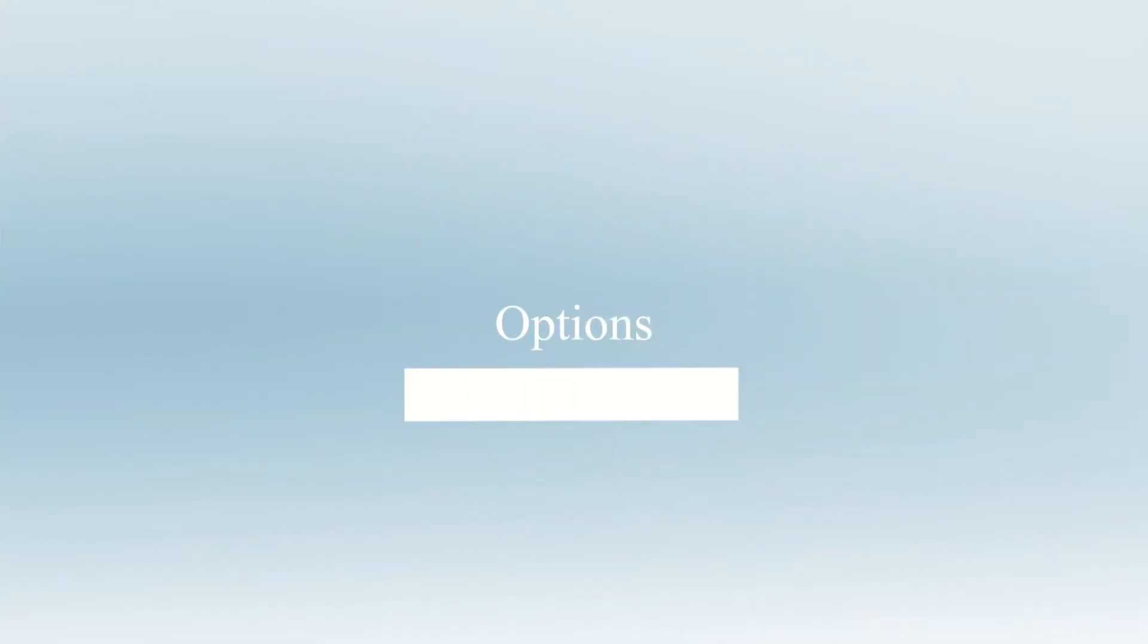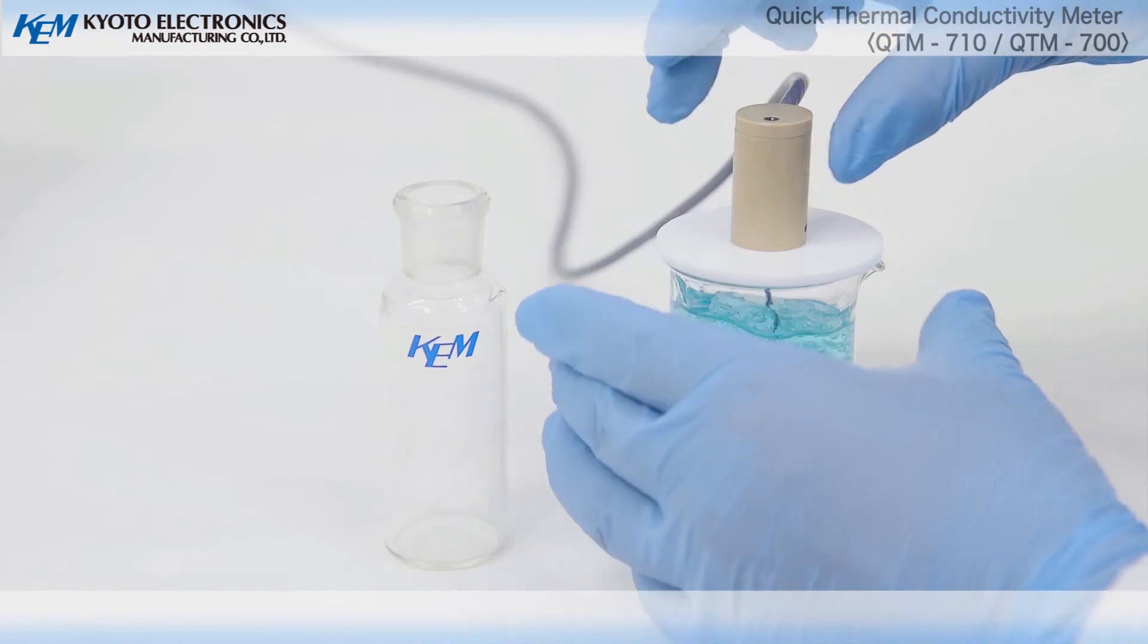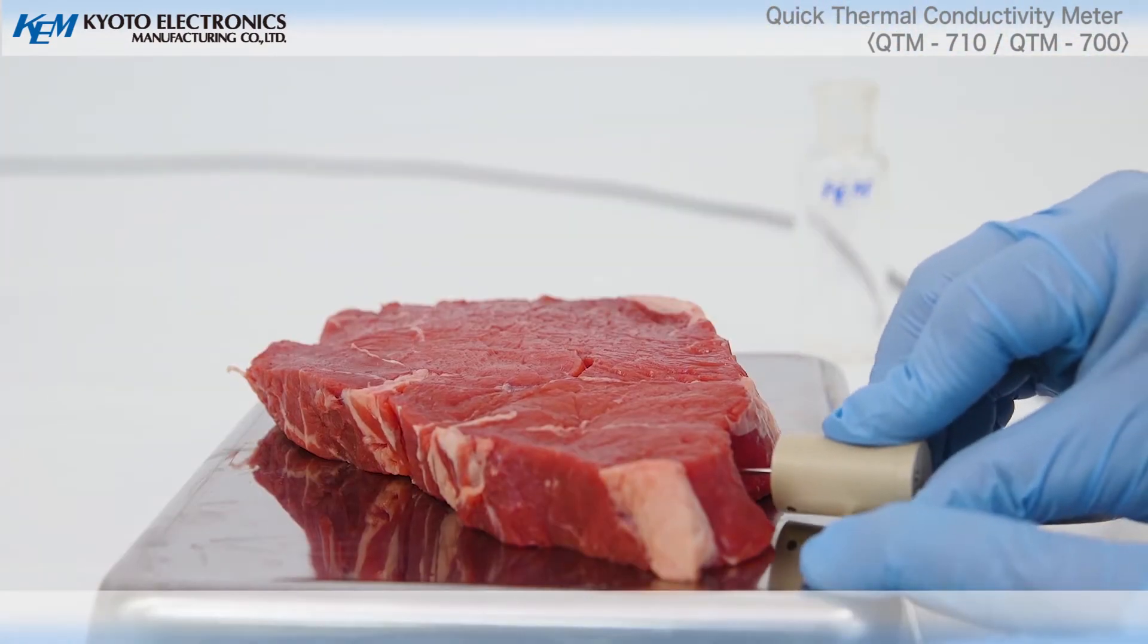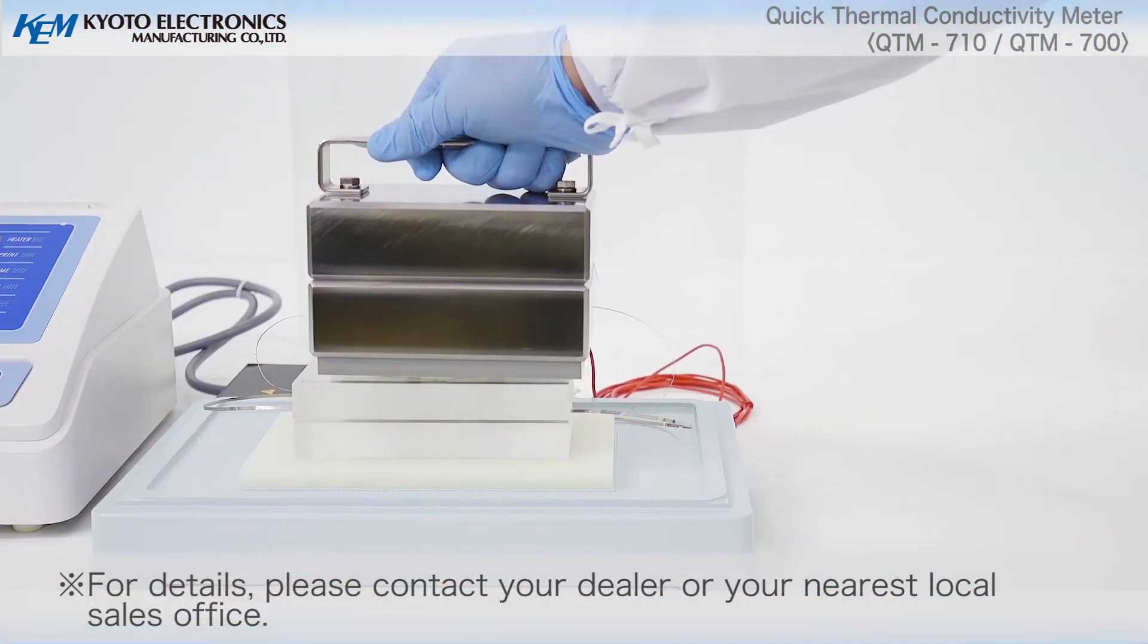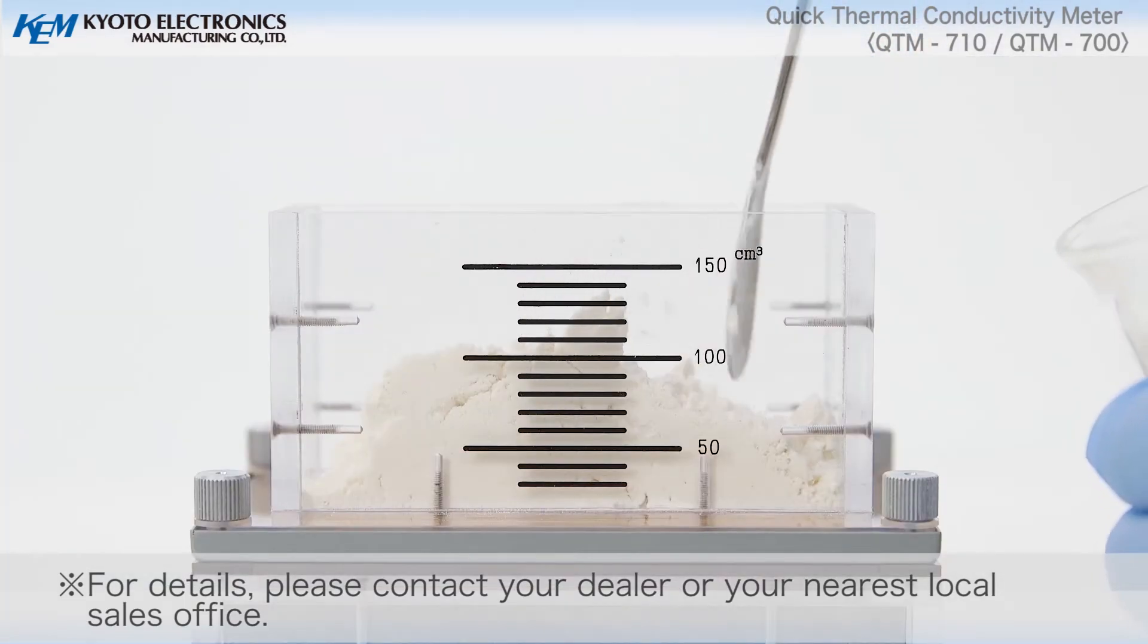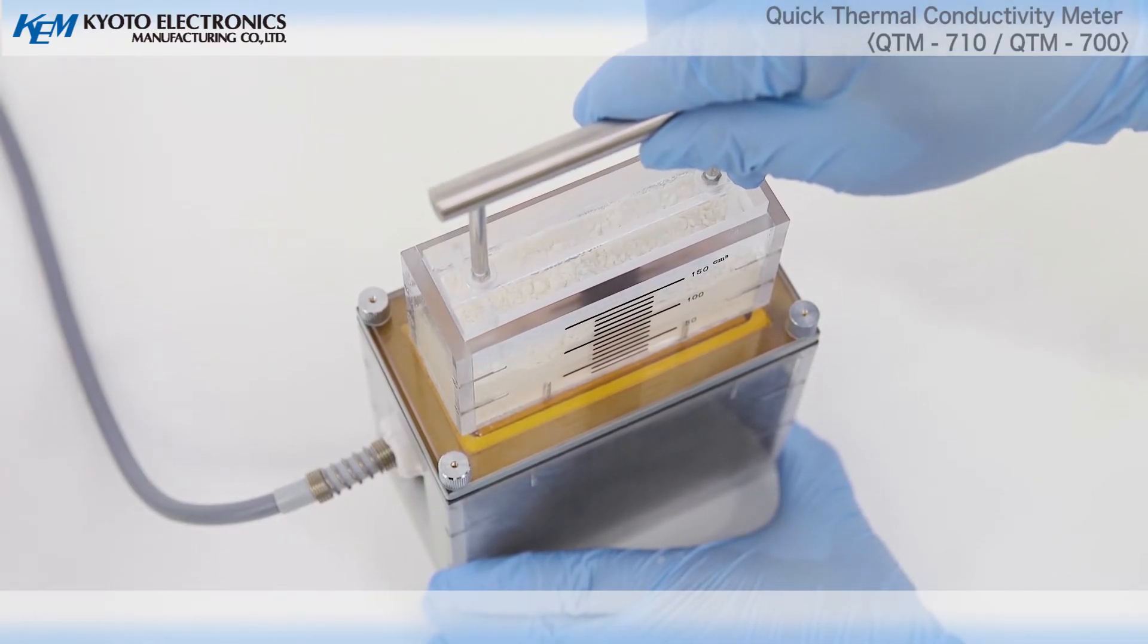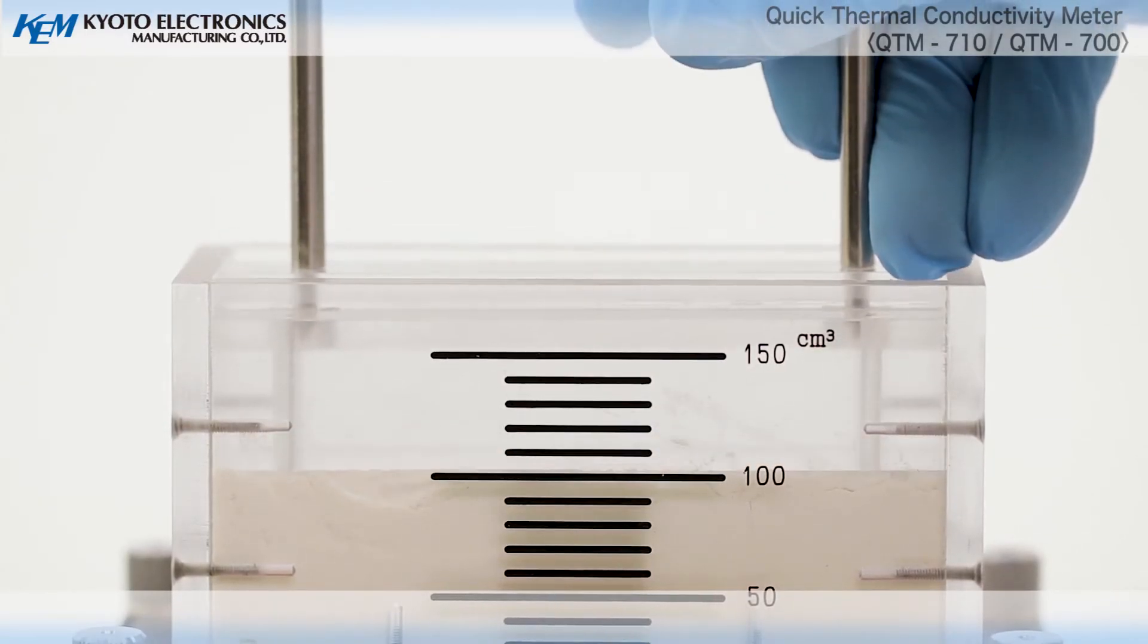Options. In order to use the quick thermal conductivity meter more conveniently and in accordance with its usage, various options are available. By using an optional powder container with scale, it is possible to measure the bulk density thermal conductivity of a powder sample.